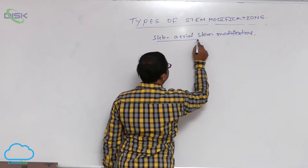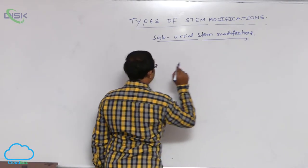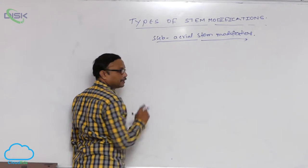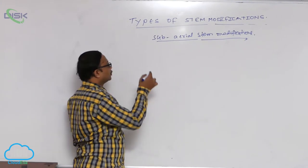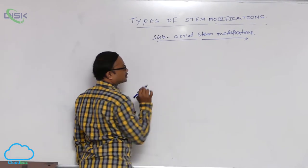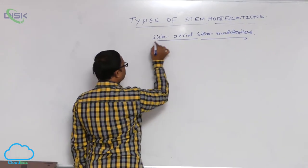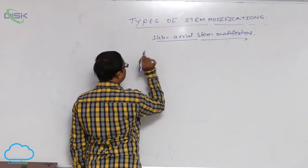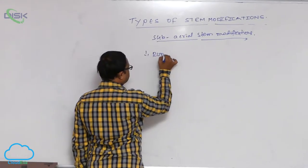Sub-aerial stem modification means that some part of the stem is below the soil and some part is above the soil. These are known as sub-aerial stem modifications. There are mainly four types: the first one is runners.